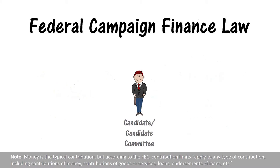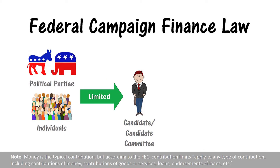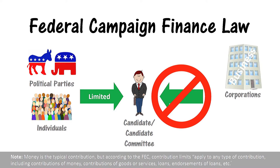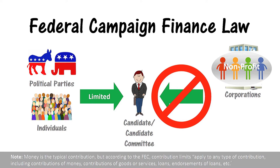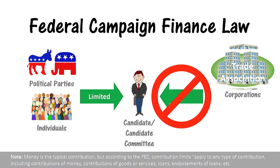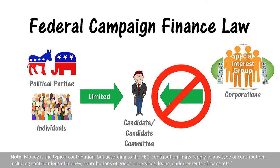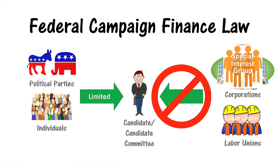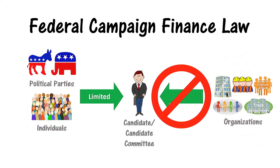Federal law limits contributions to political candidates, or candidate committees, from individuals and political parties. And it prevents contributions from corporations, including businesses, non-profits, trade associations, and special interest groups. Labor unions are also prohibited from contributing. Going forward, I will refer to all of these by the general term: organizations.